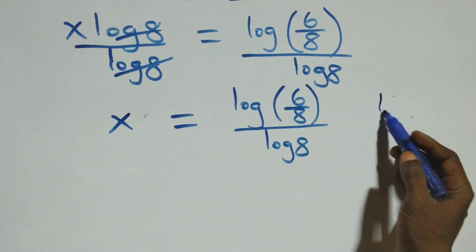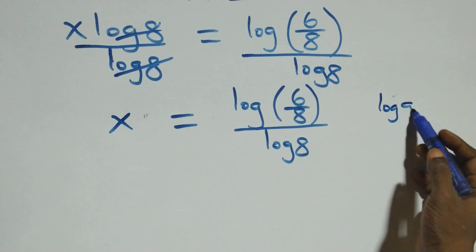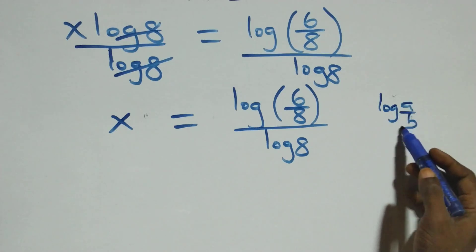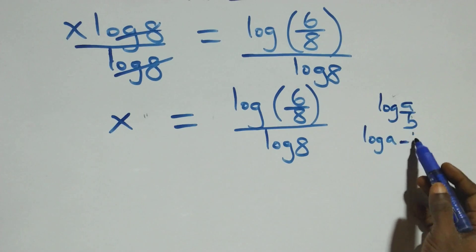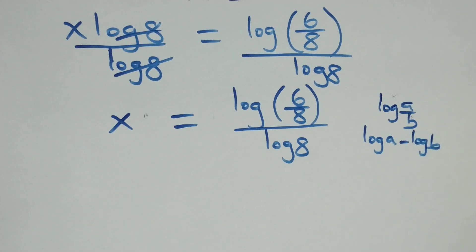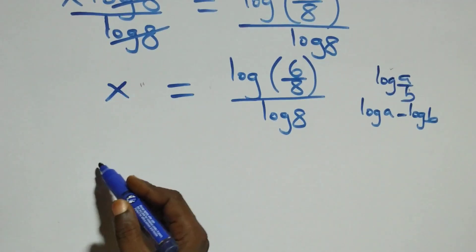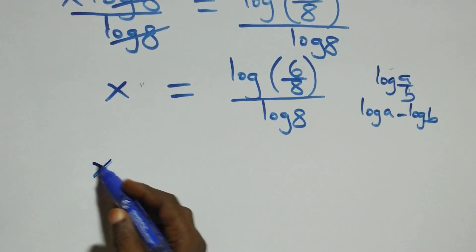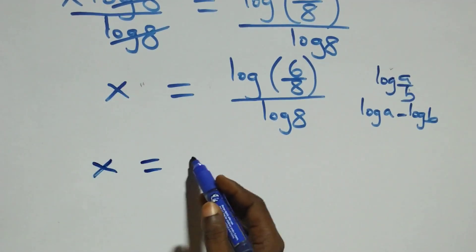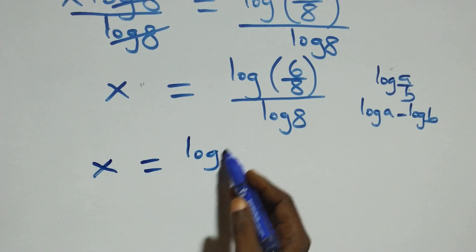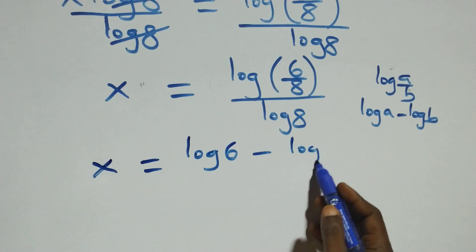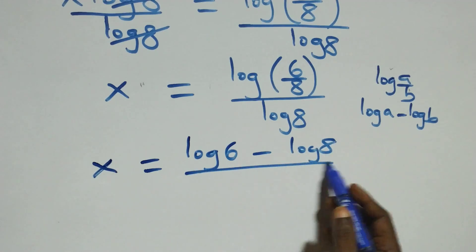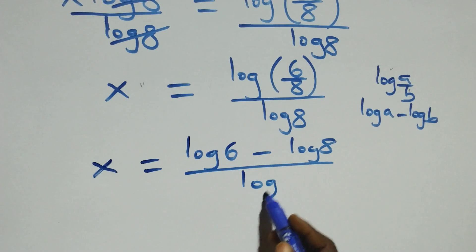The next step: we apply the law of logarithms. When we have log A over B, this is the same thing as log A minus log B. So this becomes x equals log 6 minus log 8, all over log 8.